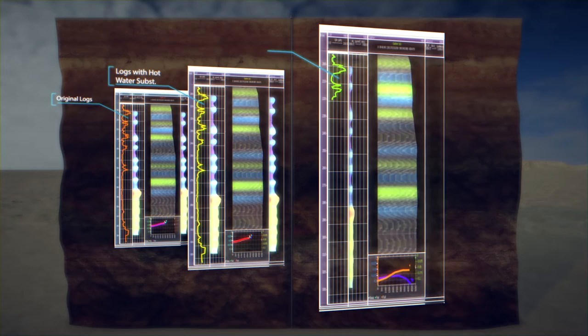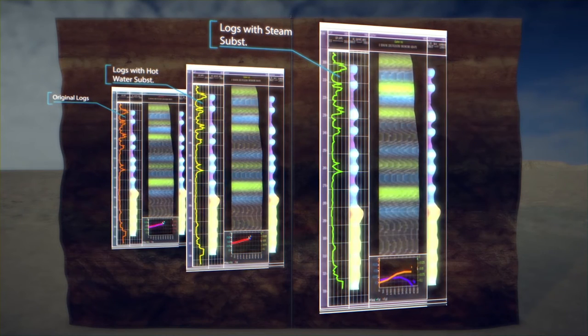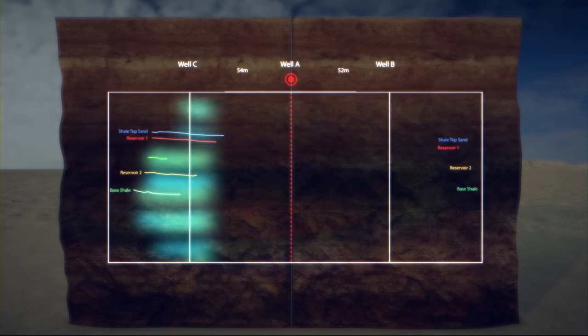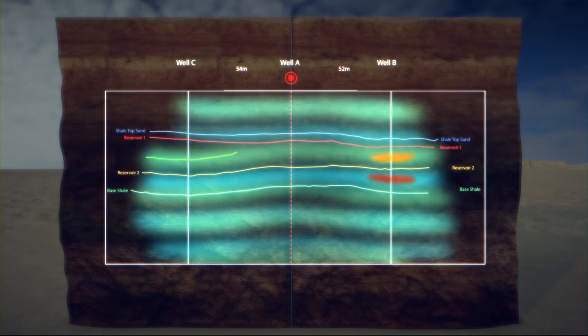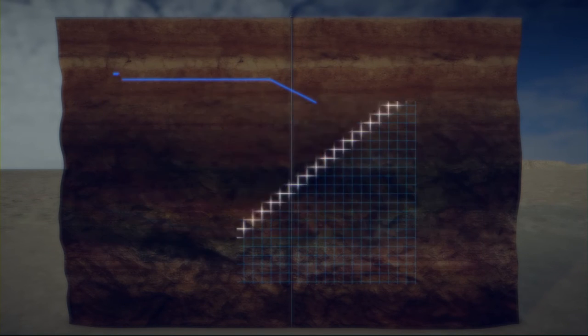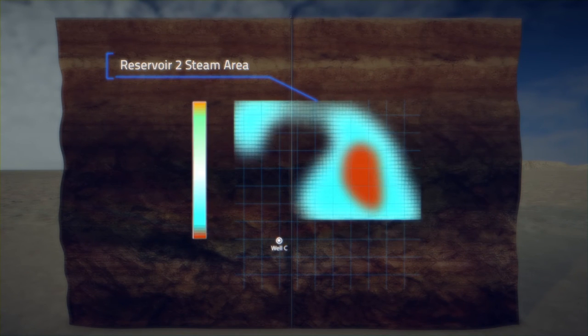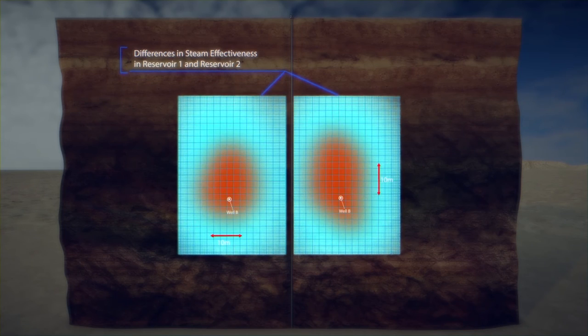Rock physics modeling predicted significant amplitude changes as the steam and pressure replaces the heavy oil with steam. In looking at a seismic line across the well that received the steam injection, there is in fact higher amplitudes appearing around that well, allowing the shape and size of the steam to be determined.